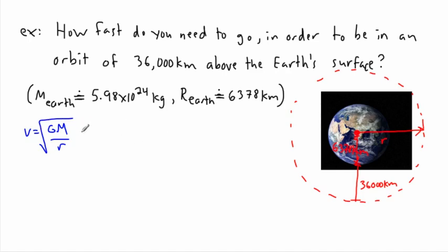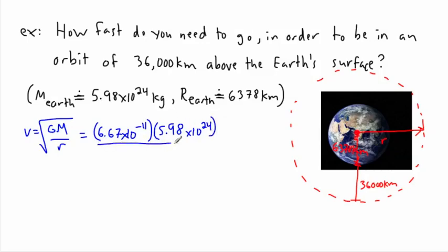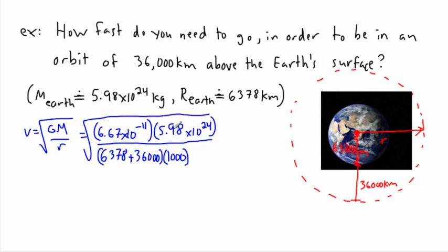It's that easy — but let's start doing it. We've got G, which is 6.67 times 10 to the negative 11, times the mass of the Earth, which is approximately 6 times 10 to the 24 kilograms, divided by — and this is really important — we have to add these in kilometers first: 6,378 plus 36,000. But this is in kilometers, and I have to put it in meters. There are a thousand meters in a kilometer, so I multiply by a thousand. The key things: we had to add these up to get the total distance from the center, and we had to convert to meters — that's where the thousand came from.